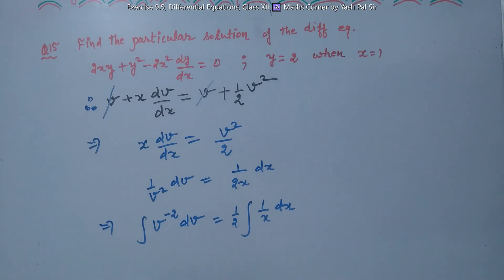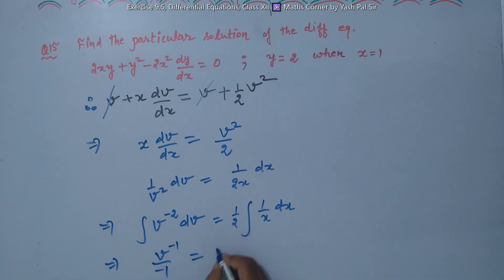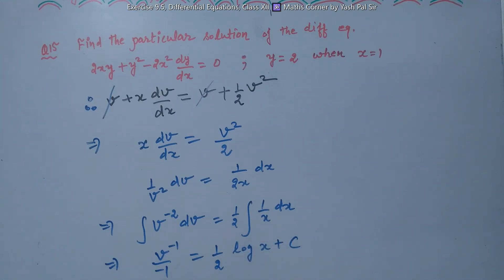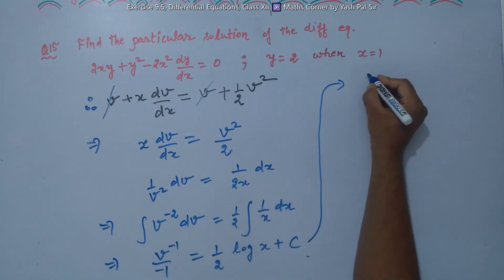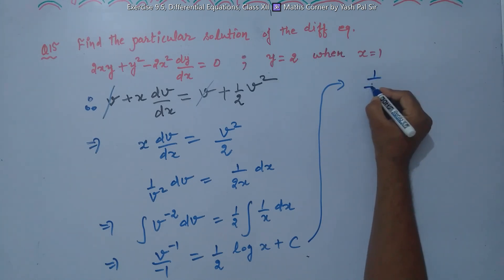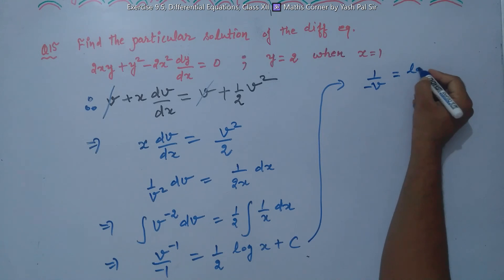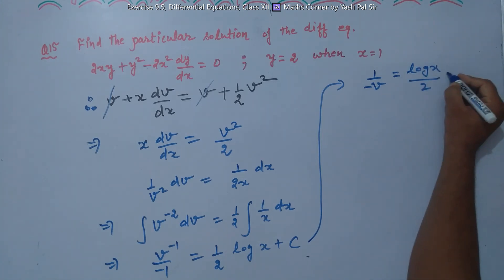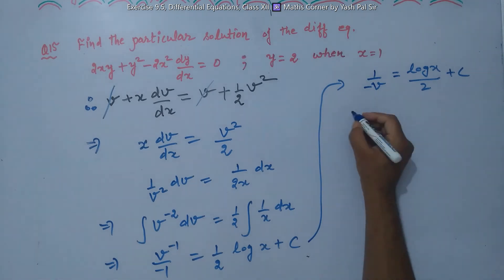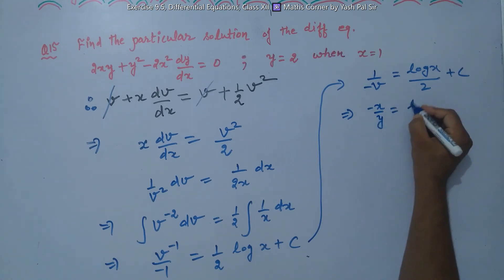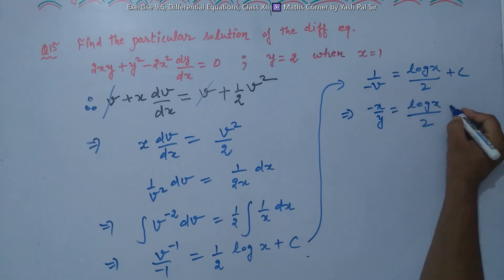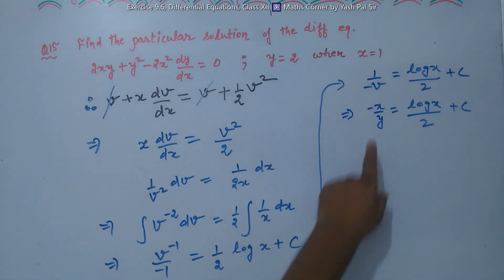Separating the variables: (1/v²)dv equals (1/2x)dx. Writing v^(-2)dv equals (1/2)(1/x)dx, and integrating both sides, we get v^(-1) divided by minus 1 equals (1/2) log x plus c. This simplifies to minus 1/v equals (log x)/2 plus c.